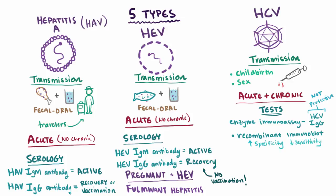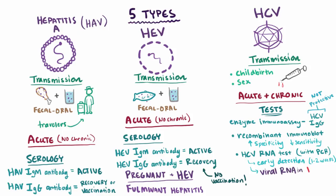Clinically, recombinant immunoblot assay doesn't provide much usefulness and actually needs an additional supplemental test if it's positive. The gold standard for HCV diagnosis is an HCV RNA test using PCR — polymerase chain reaction. This method can detect the virus very early, as early as 1-2 weeks after infection, by detecting the levels of viral RNA in the blood. If RNA levels begin to decrease, we know the patient is recovering. If RNA remains the same, the patient probably has chronic HCV.